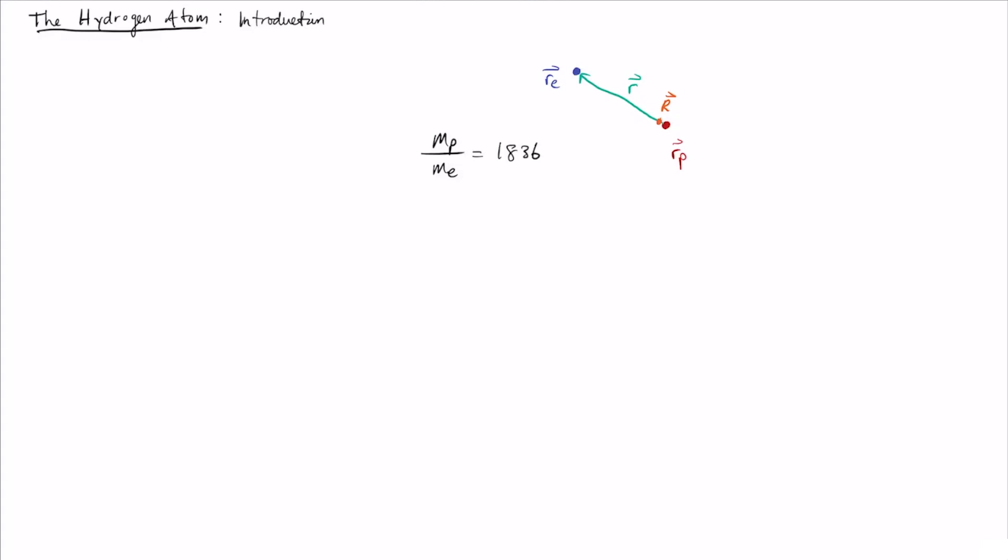In that model we have our Hamiltonian with two terms. We'll have the kinetic energy, which will have the normal form, and then we have a potential energy. The potential energy is the potential energy between a negatively charged particle and a positively charged particle, both with the same absolute magnitude of the charge. This is a Coulomb interaction between these two.